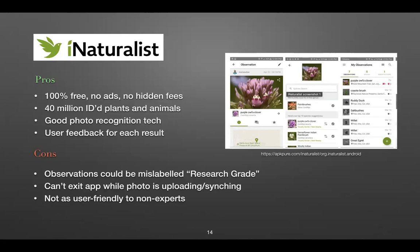Going back to the cons: despite the 40 million ID plants and animals on iNaturalist, there is a possibility that some observations could have been mislabeled as research grade. I admit I made the mistake of not marking a native plant from my garden as cultivated, and it became research grade — which is a mistake. Please make sure that if it is a native plant in your garden, mark it as cultivated or captive so it won't negatively impact scientific research.